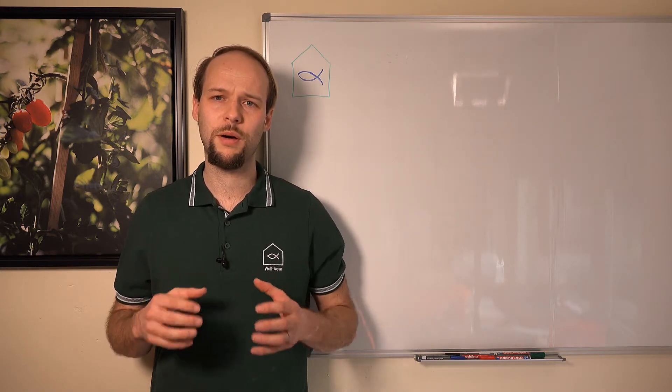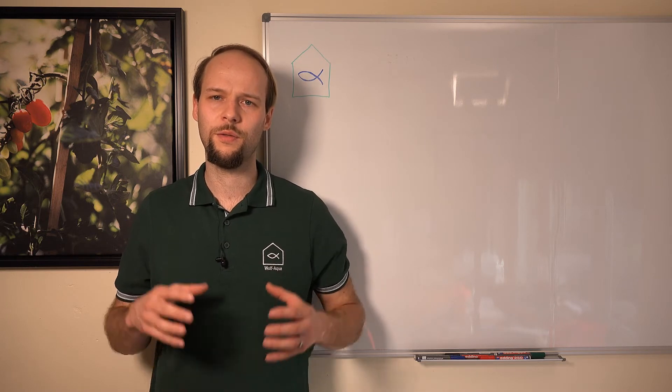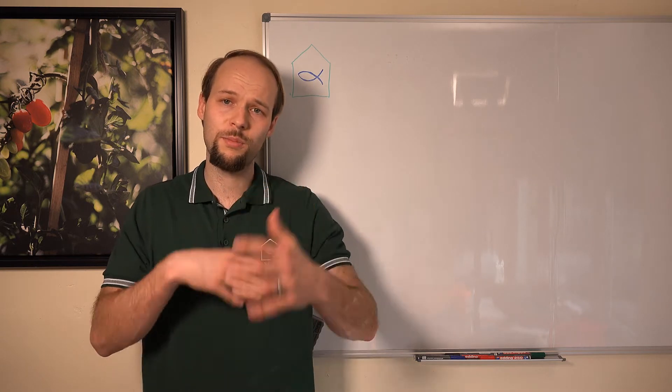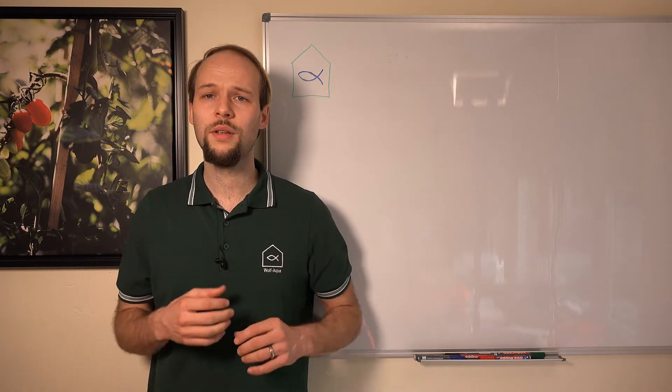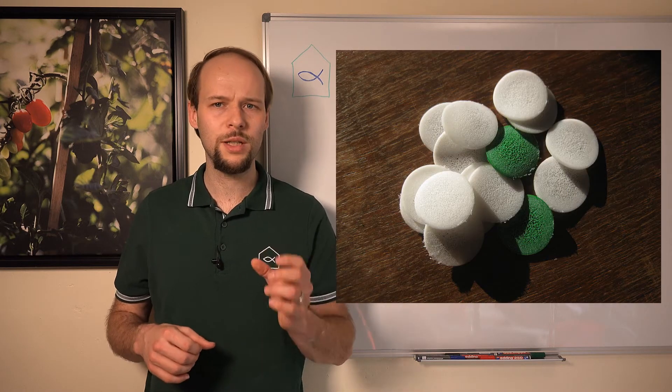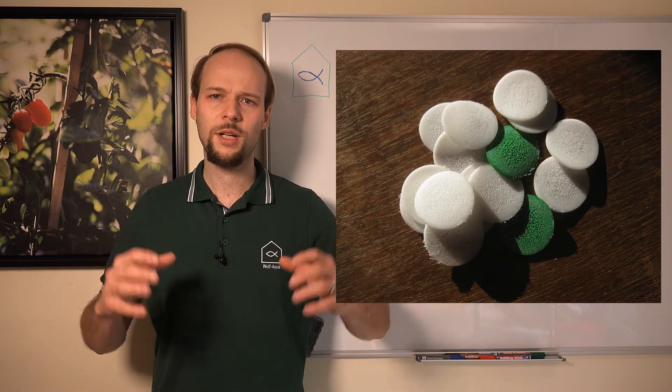One of the weak points of such a moving bed biofilter is that only 50% of the volume can be utilized for the carrier material, because the rest of the volume is needed to keep the whole media always in suspension. However, this weak point is partially compensated by the carrier materials, because some of those have a really large surface area per cubic meter.